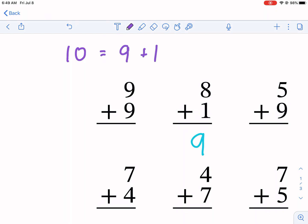I know that nine plus one equals 10. So you see here that I have nine plus nine. So I knew nine plus one will get me to 10 and then I'm going to have eight left over.